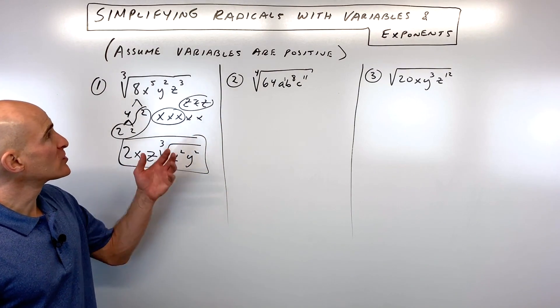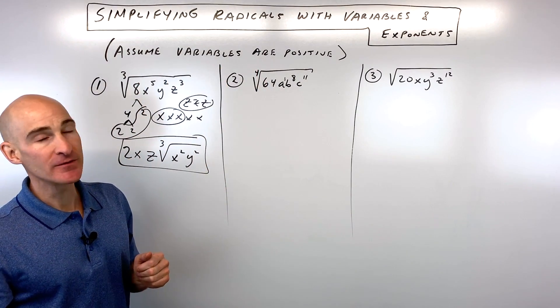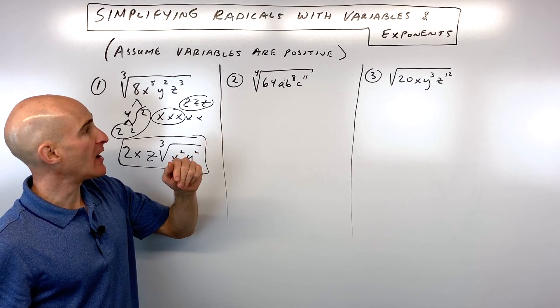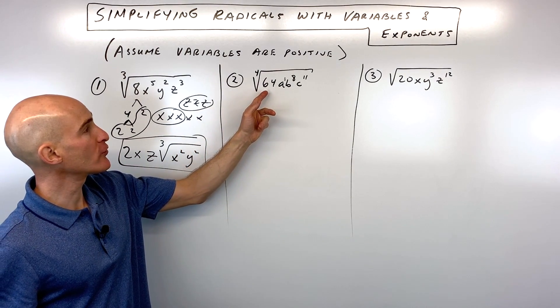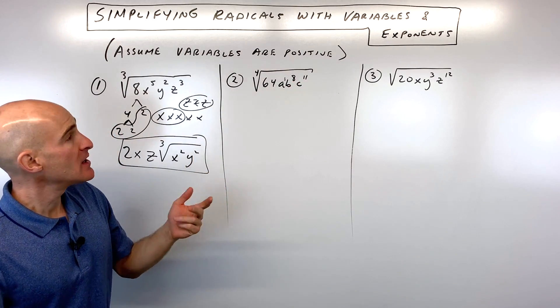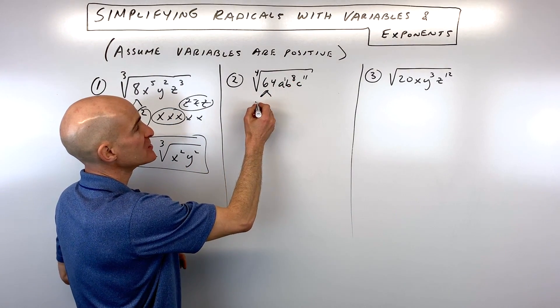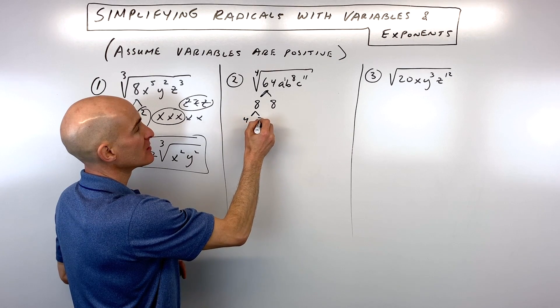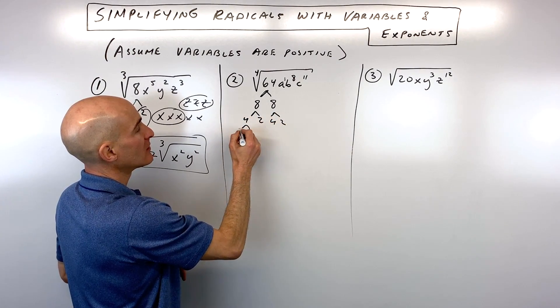So for this video, we're assuming that all variables are positive. Okay, for number 2 now, let's see if we can do this one. We're looking at the 4th root of 64ab to the 8th, c to the 11th. So same idea. I would break down 64 into its prime factors.